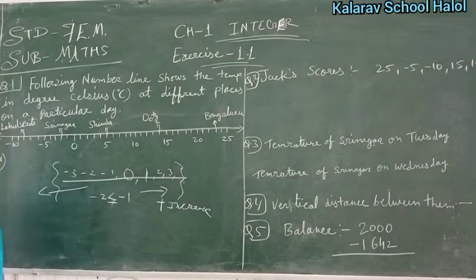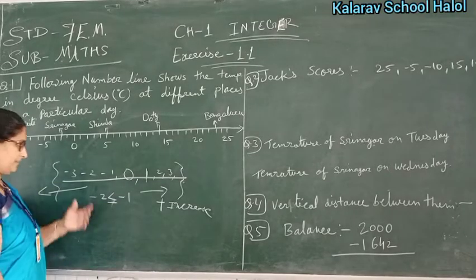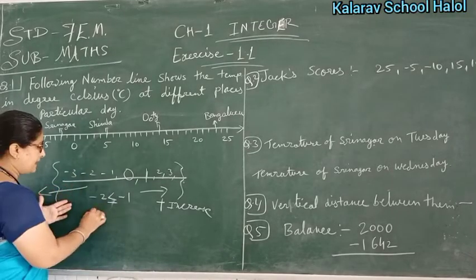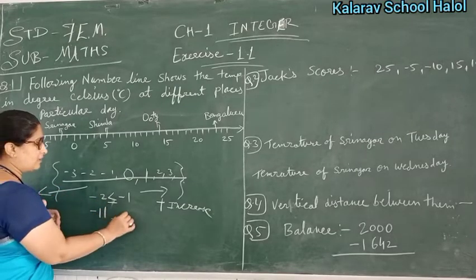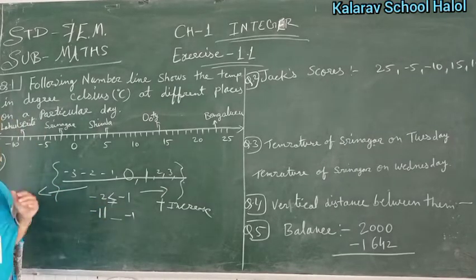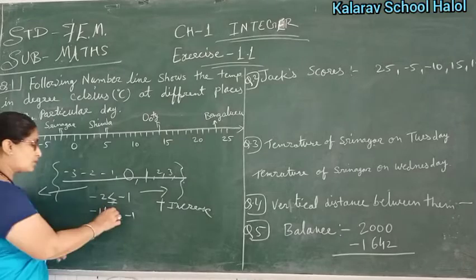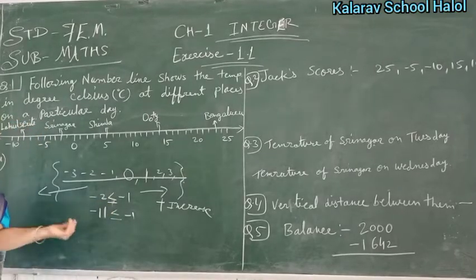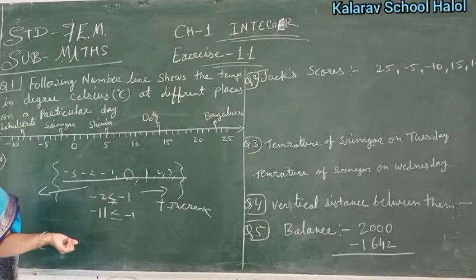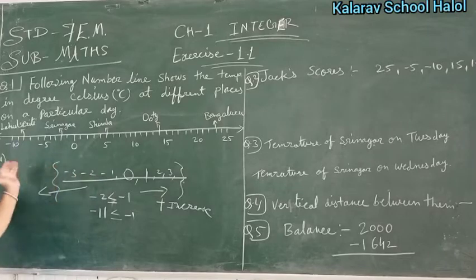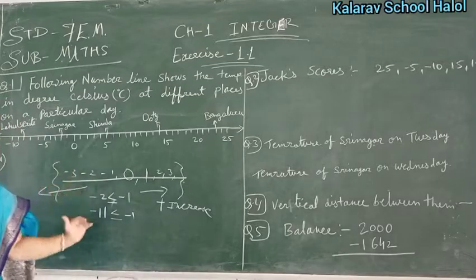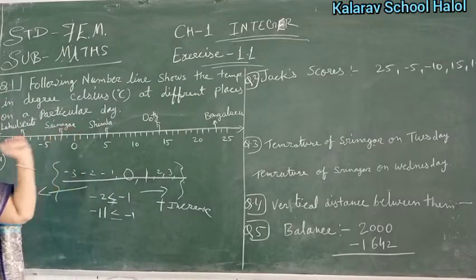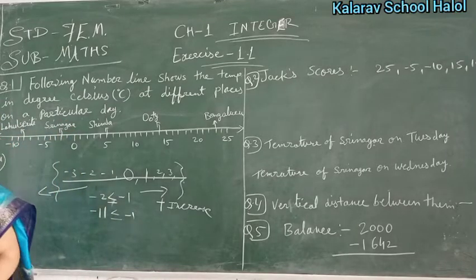Addition and subtraction will also follow this type. If we have minus 11 and suppose it is 1, then 1 is also less than minus 11, because it is left hand side type. Now we will start the exercise, which is very easy.